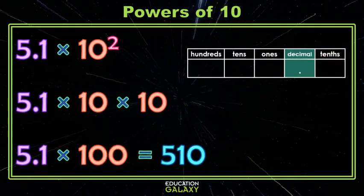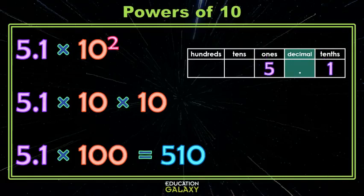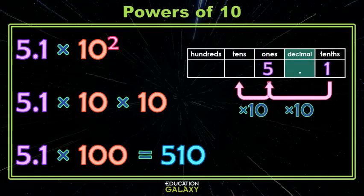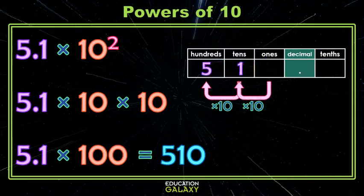Well, I had a 5 in the ones and a 1 in the tens, and I multiplied by 10, and everybody increased by a place value. And then I multiplied by 10 again, and everybody increased by a place value, and I just fill in my 0 to make it pretty, and you see we have 510.